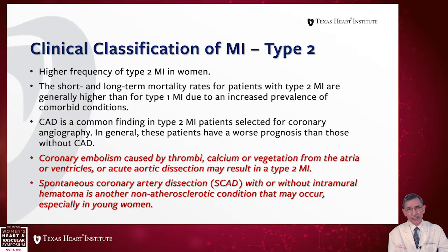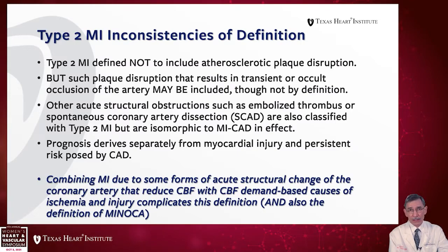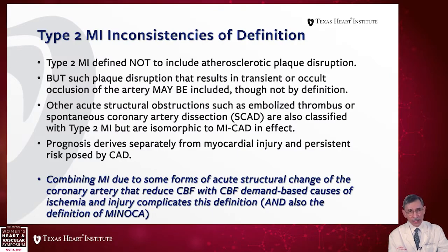I find these definitions a little inconsistent. Type 2 is defined not to include atherosclerotic plaque disruption, but such disruption resulting in transient or occult occlusion may be included. Other acute obstructions such as embolized thrombus and spontaneous coronary dissection — so-called SCAD — are also classified with Type 2 MI, but they are isomorphic to myocardial infarction due to coronary disease in effect. Combining myocardial infarction due to acute structural change of the coronary artery with coronary blood flow demand-based causes of ischemia complicates this definition and also, as you will see, the definition of MINOCA.